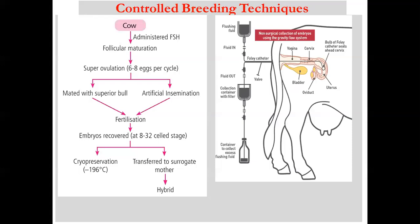The flow chart of MOET: First, the cow is administered with FSH — follicle stimulating hormone — so that follicles mature inside the ovary and super ovulation occurs, producing six to eight egg cells per cycle. These eggs are either mated with a superior bull naturally or inseminated artificially, causing fertilization. The embryos are then collected at the eight to thirty-two cell stage and transferred to surrogate mothers. If necessary, the fertilized eggs can also be preserved by cryopreservation at minus 196 degrees centigrade in liquid nitrogen.